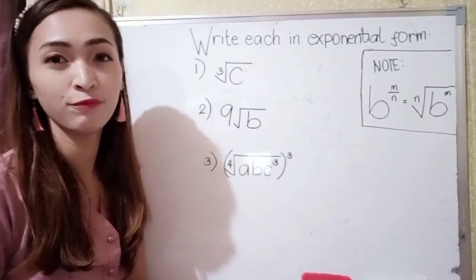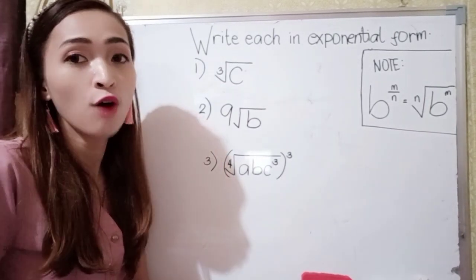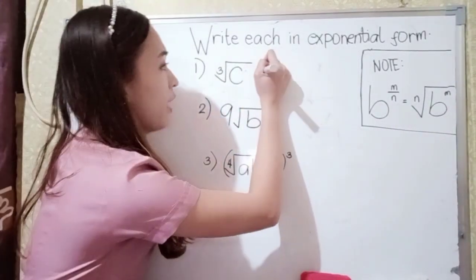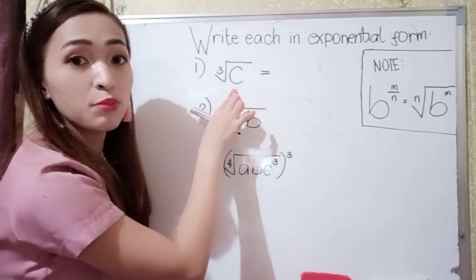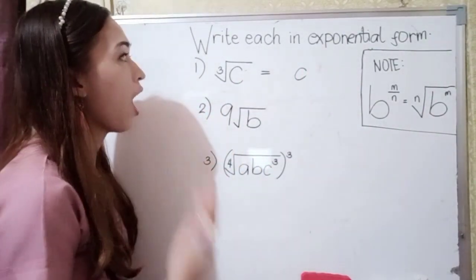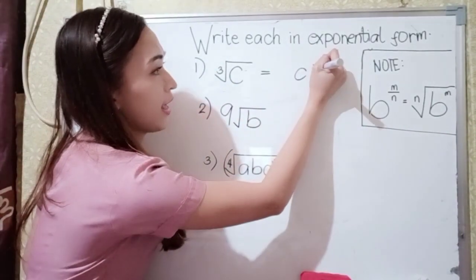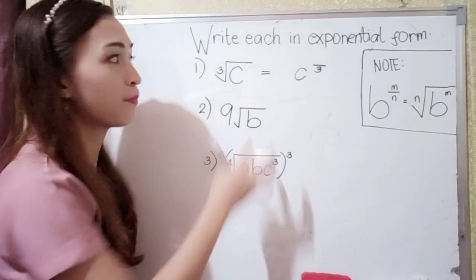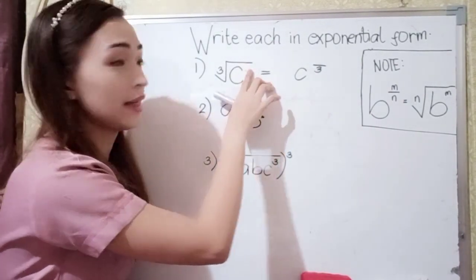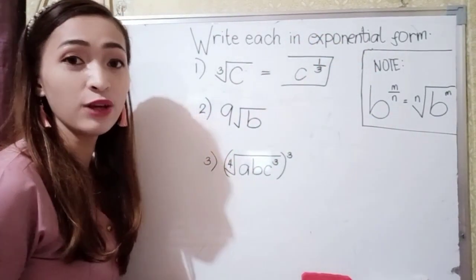Now for writing in exponential form — the vice versa. For number 1, we have the cube root of c. Our radicand c becomes our base. Our index 3 is our denominator. Since we have no exponent shown, it is automatically 1, giving us numerator 1. So the answer for number 1 is c raised to 1 third.